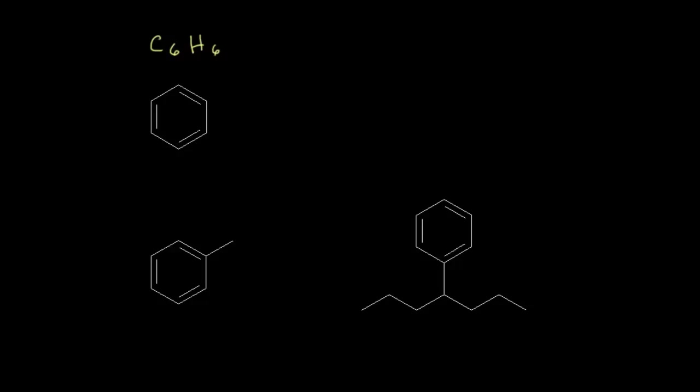The winning structure was proposed by Auguste Kekulé, who said that benzene contains six carbons in a ring with alternating single and double bonds in that ring. The story goes that Kekulé came up with this dot structure when he had a dream — he saw some snakes biting each other's tails, and the snakes whirled around in a circle. And that gave Kekulé the idea for the ring.